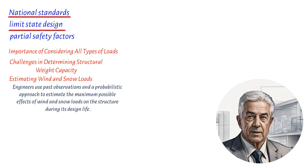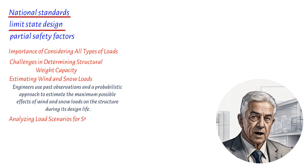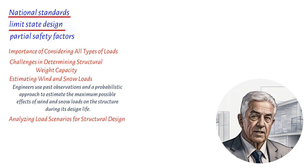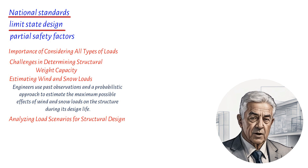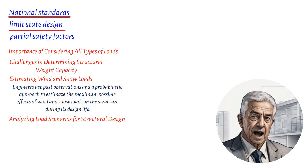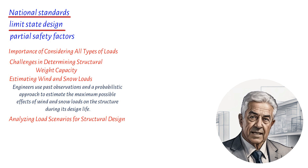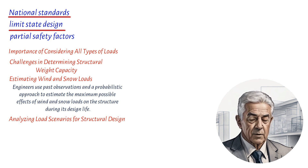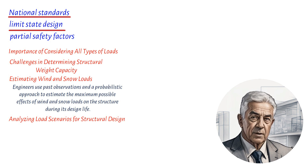This means that they consider the worst-case scenario and design the structure to withstand it. But just to be extra safe, engineers also apply partial safety factors to these characteristic values to obtain design loads. These safety factors provide an additional margin of safety against collapse.